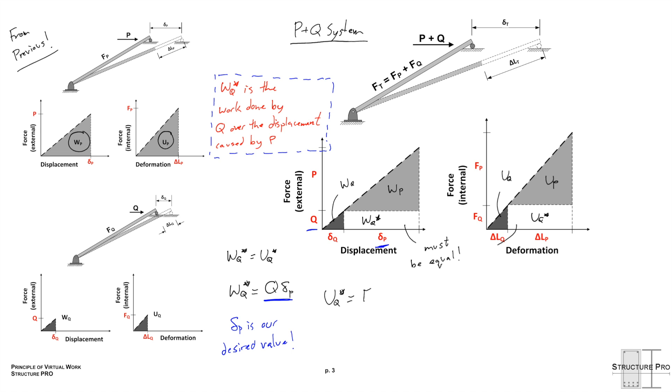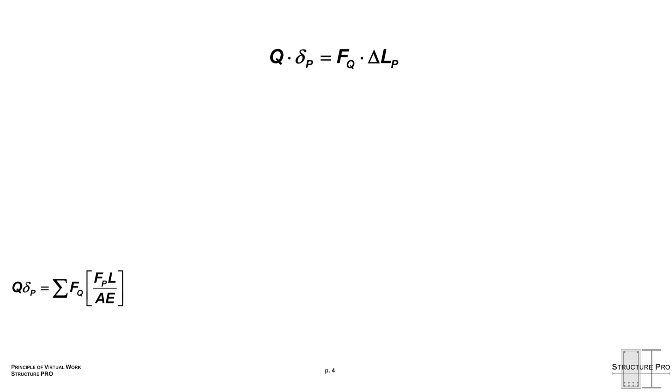So our strain energy UQ star we can say is FQ times delta LP. Again, just a rectangular shape. Putting these together we can write that Q delta P is FQ delta LP. And recalling from earlier that an axial loaded bar has a delta LP of FPL over AE, the subscript P just saying the P is causing the F and the delta LP. We can sub this in and then we'll just add this little summation symbol, being as there could be more than one member, and there often is in the truss, for example.